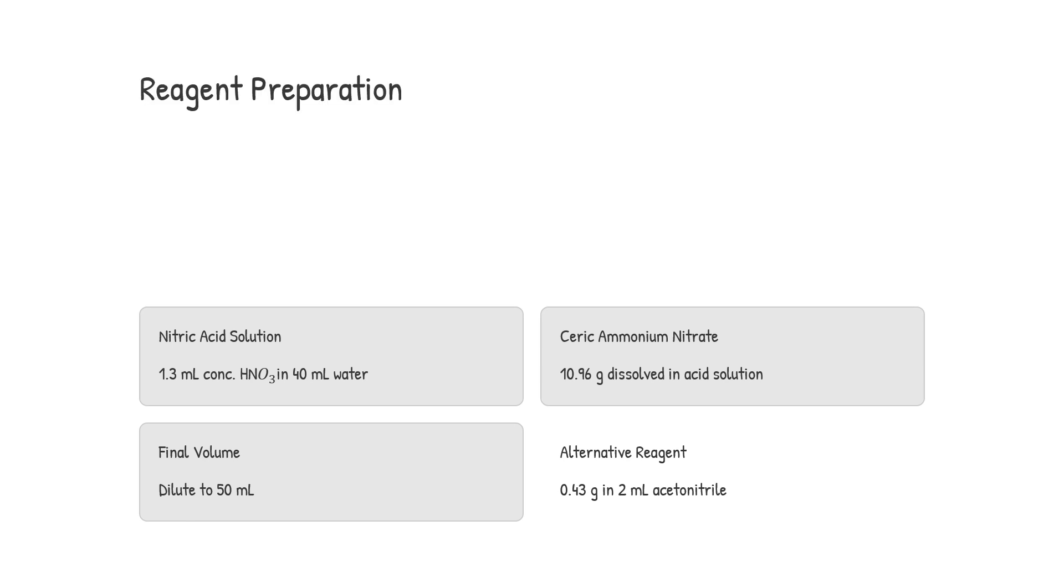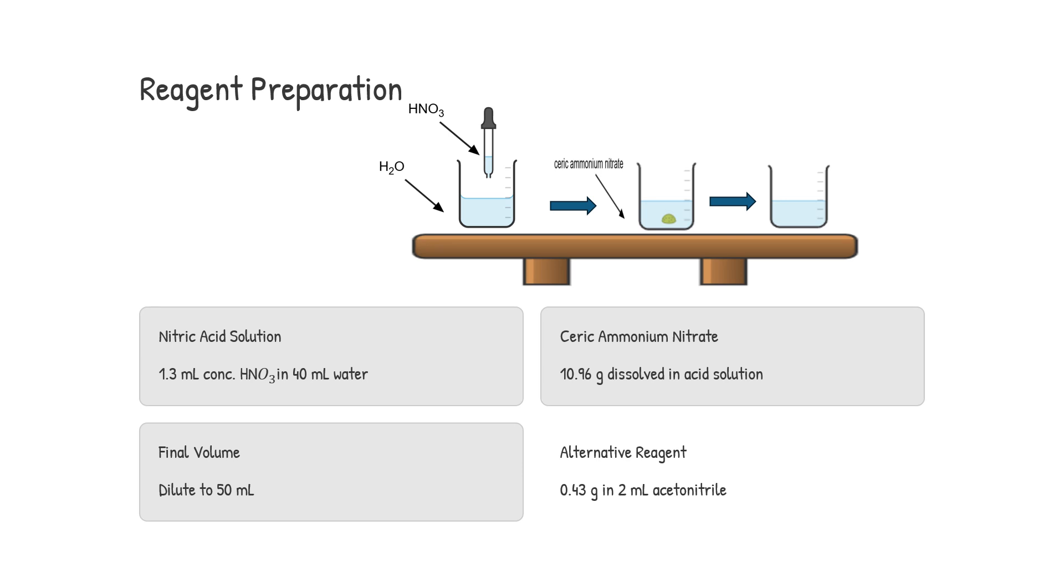To prepare the ceric ammonium nitrate reagent, add 1.3 milliliters of concentrated nitric acid to 40 milliliters of distilled water. Then dissolve 10.96 grams of yellow ceric ammonium nitrate in this dilute nitric acid solution. Once dissolved, dilute to 50 milliliters. The test is carried out at room temperature, 25 degrees Celsius. This reagent is usable for about a month. For water-insoluble compounds, an alternative reagent can be prepared by dissolving 0.43 grams of ceric ammonium nitrate in 2 milliliters of acetonitrile.